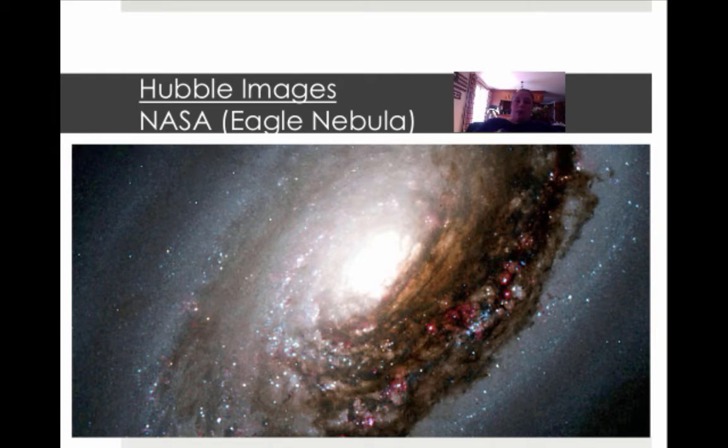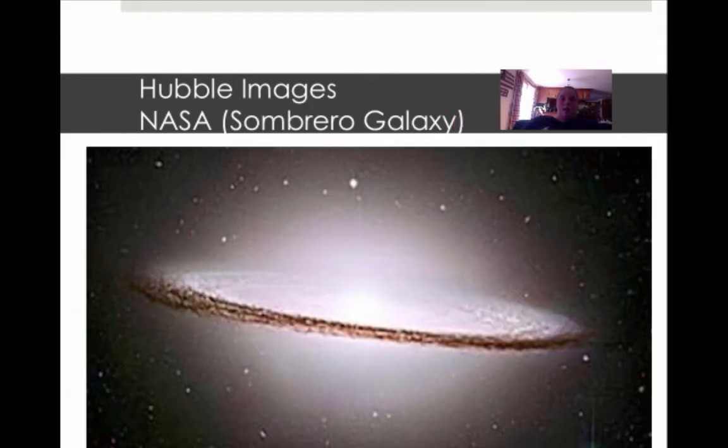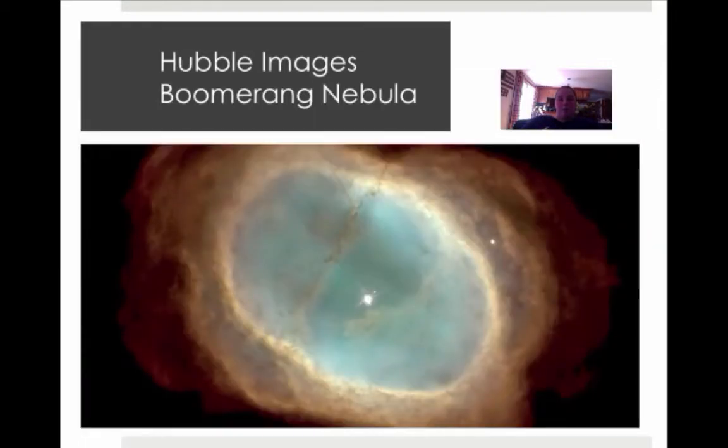This is the Eagle Nebula. Again, these are all taken with the Hubble Telescope out in outer space. My favorite galaxy one, this is the Sombrero Galaxy, kind of looks like a sombrero hat there. And then this is called the Boomerang Nebula and I love this one. I just love all the colors and the details that you can see in this. It's so cool to think these things are so far away and yet we get to see pictures of them.